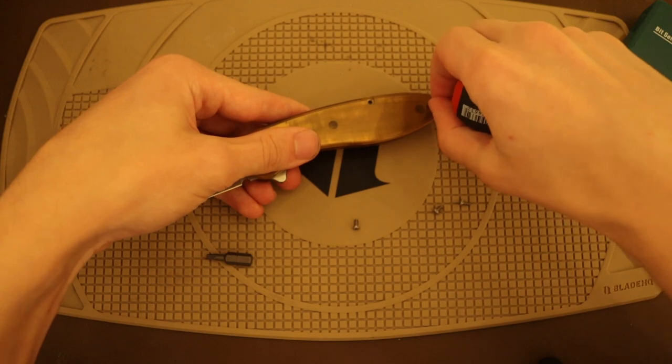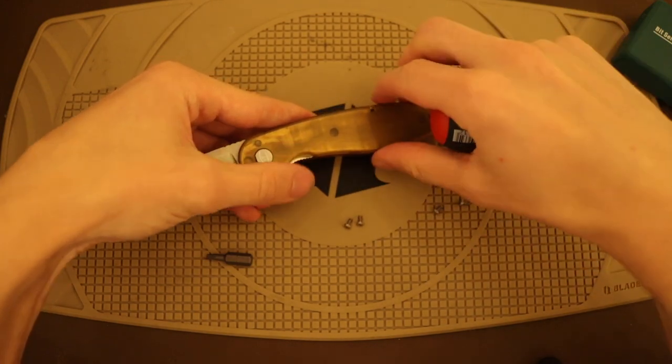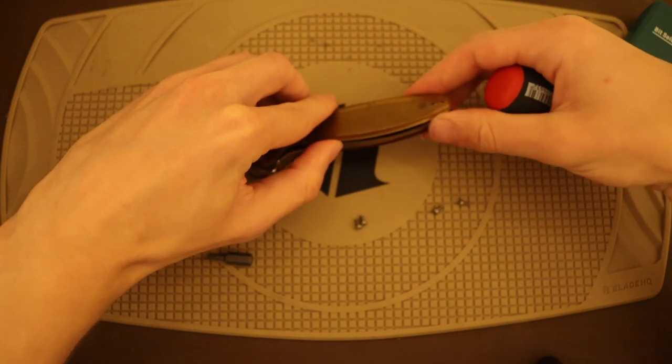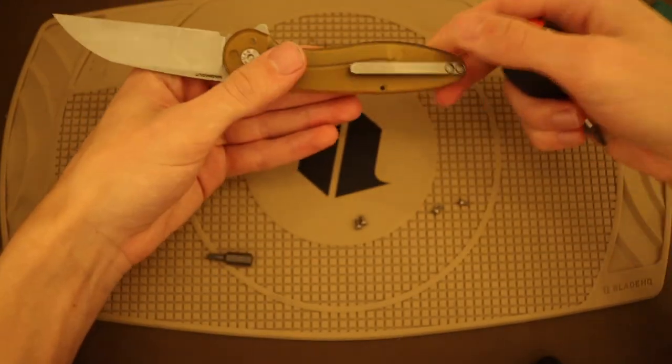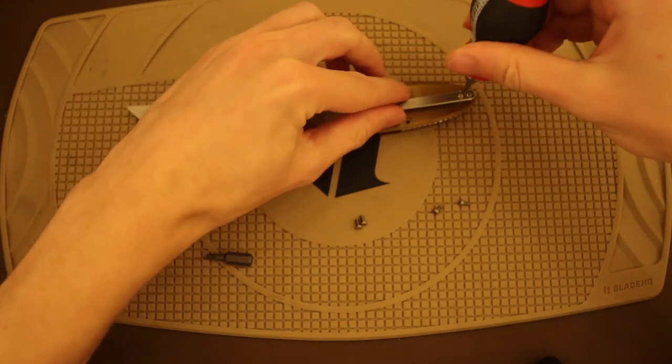And some companies such as Emerson do in fact use titanium liners, but I actually like stainless steel liners because some people may think that that makes the knife cheap, and it does technically make it cheaper than titanium.